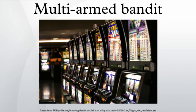Another variant of the multi-armed bandit problem is called the adversarial bandit, first introduced by Auer and Cesa-Bianchi. In this variant, at each iteration an agent chooses an arm and an adversary simultaneously chooses the payoff structure for each arm. This is one of the strongest generalizations of the bandit problem, as it removes all assumptions of the distribution, and a solution to the adversarial bandit problem is a generalized solution to the more specific bandit problems.